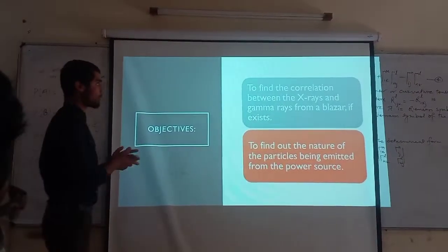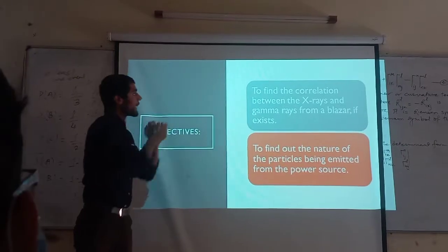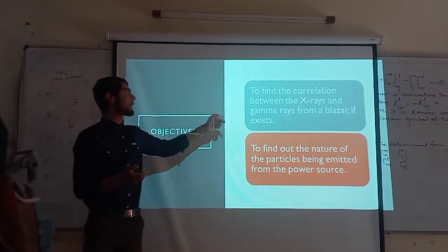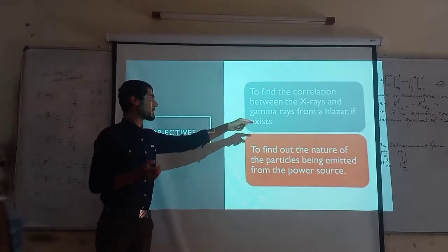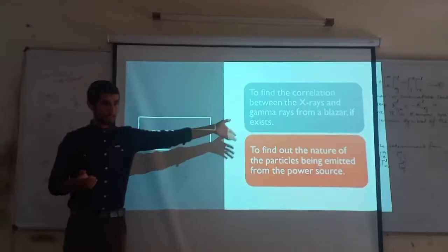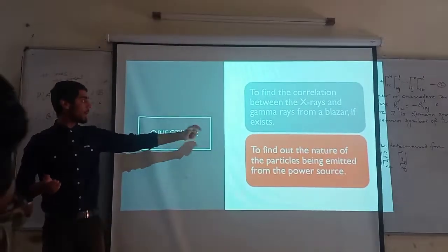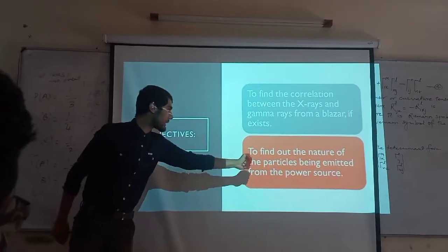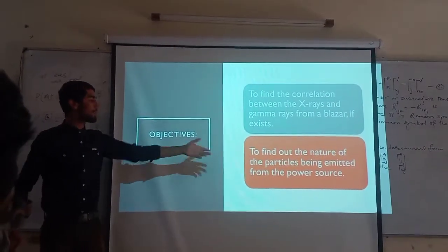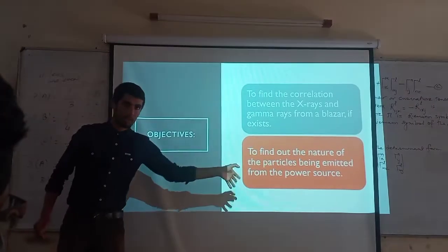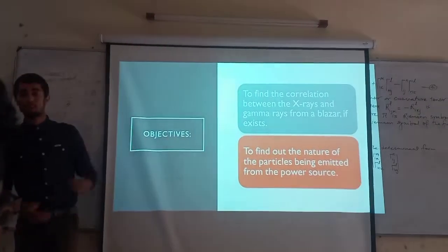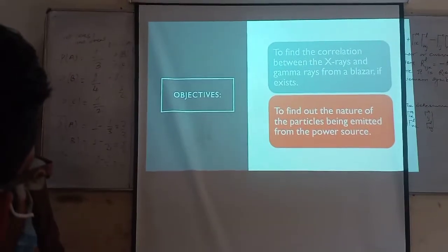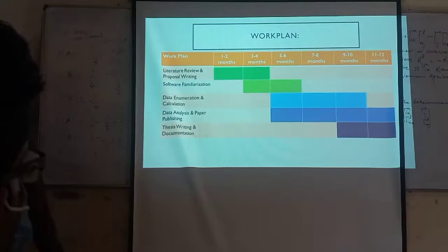Objectives: Our main objectives are, first, to find the correlation between the X-rays and gamma rays from the blazar PKS 2155-304, if it exists. Second, to find out the nature of the particles being emitted from the power source. These are our two main objectives, and we will be studying much further.